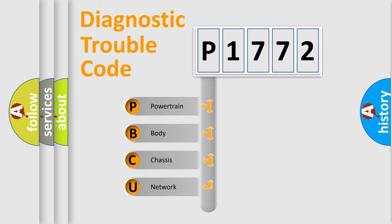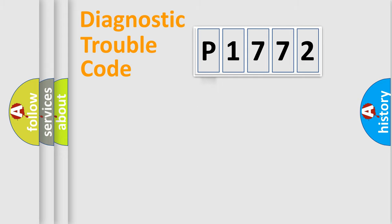We divide the electric system of automobile into four basic units: Powertrain, Body, Chassis, and Network.